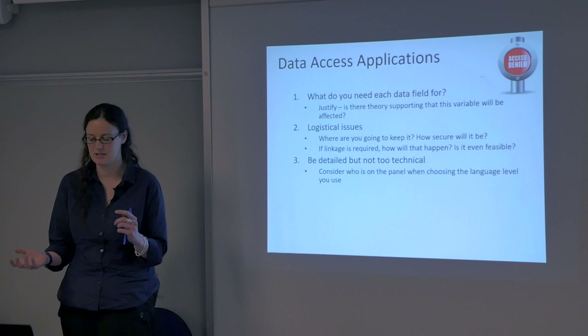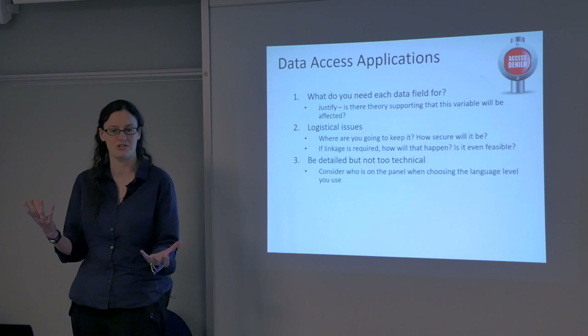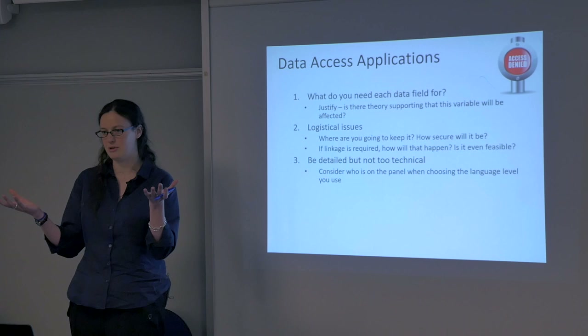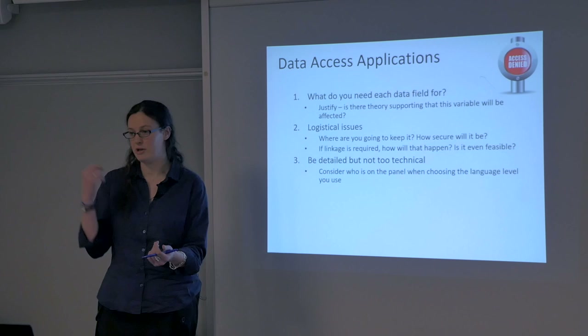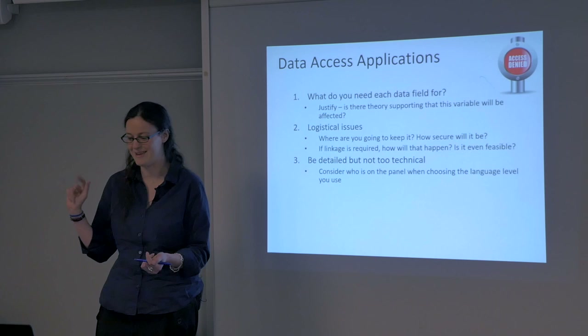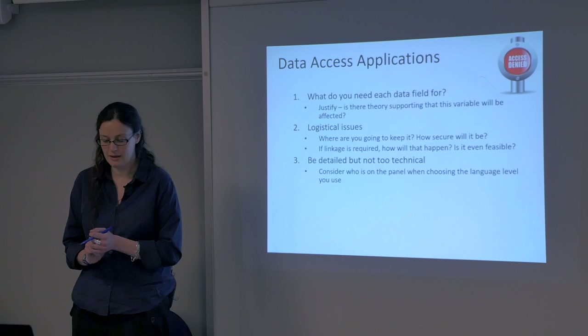On linkage: how will the linkage actually happen and is it even feasible based on the datasets you've got? If you're linking at a geographical level, does one dataset only go down to local authority level while the other goes all the way down to output area? You'll only be able to link at the higher level. For individual-level data, do you have enough variables to actually link on? You basically need forename, surname, date of birth, gender, and postcode — those are the golden five. If you don't have them, how are you going to get around that?